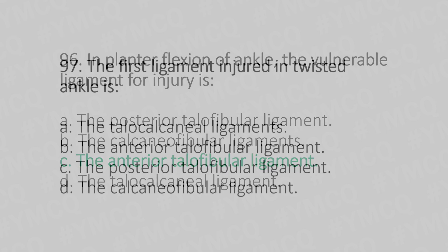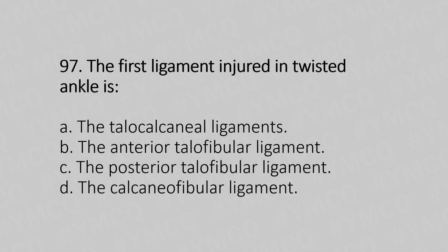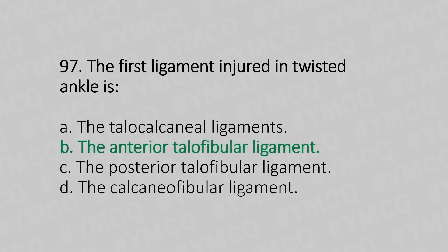Let's move to question number 97. The first ligament injured in a twisted ankle is: Option A, the talocalcaneal ligament. Option B, the anterior talofibular ligament. Option C, the posterior talofibular ligament. Option D, the calcaneofibular ligament. The answer is Option B, the anterior talofibular ligament.